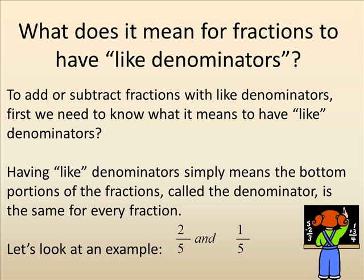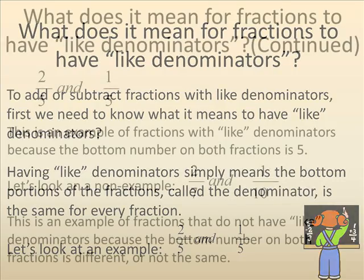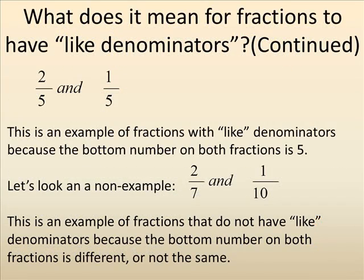Let's look at an example: 2 fifths and 1 fifth. Are these examples of like denominators? Yes — 2 fifths and 1 fifth are fractions with like denominators because the bottom number on both fractions is 5.